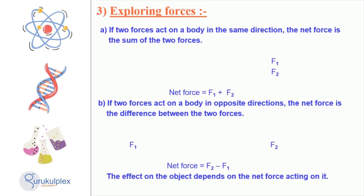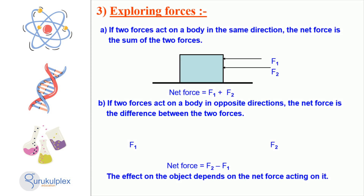When two forces act on an object in the same direction, the net force is the sum of the two forces, while if two forces act on an object in opposite directions, the net force is the difference between the two forces. The type and direction of the net force acting on an object can have a significant effect on its motion. By understanding which forces are acting on an object, we can explain its behavior.